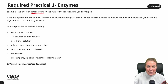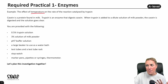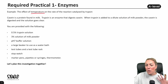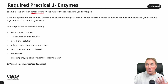This is a great opportunity to recap practical skills — what is an independent variable, what is a dependent variable, what is the purpose of controlled variables. The practical we're going to use involves milk: casein is a protein found in milk, and trypsin is a protease enzyme that digests the casein. When you add the trypsin enzyme to a solution of milk powder it digests the casein and the solution goes clear, so we can record the time taken for the solution to go clear.